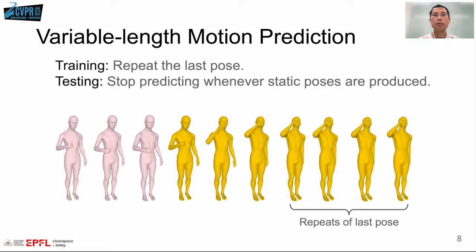For variable length prediction, we pad every training motion with its last pose to encourage the model to produce static poses after finishing an action. We can then stop predicting whenever static poses are produced during testing.